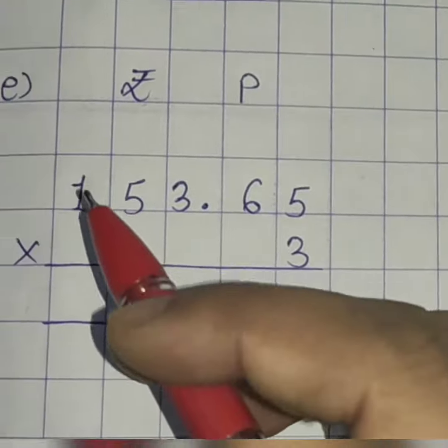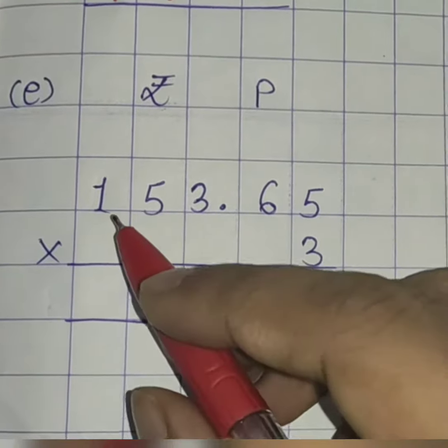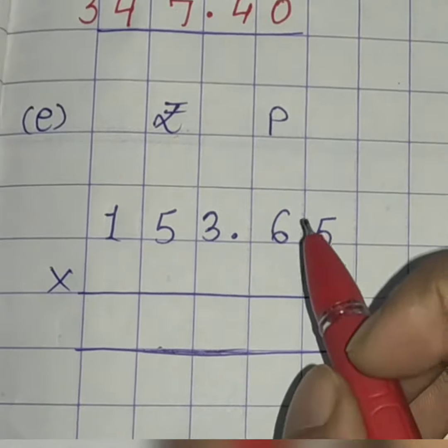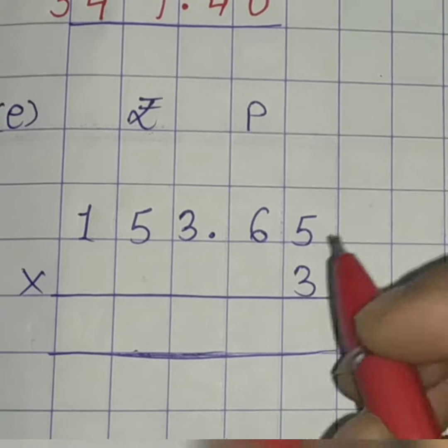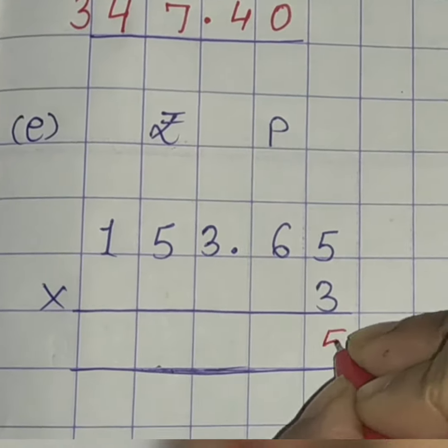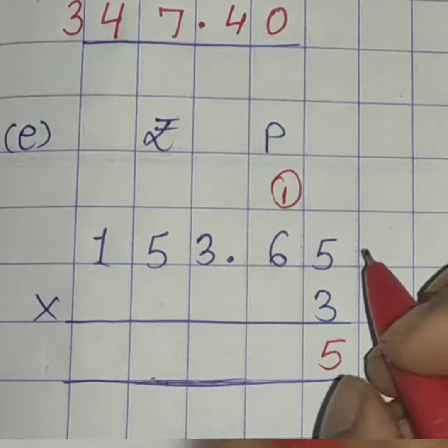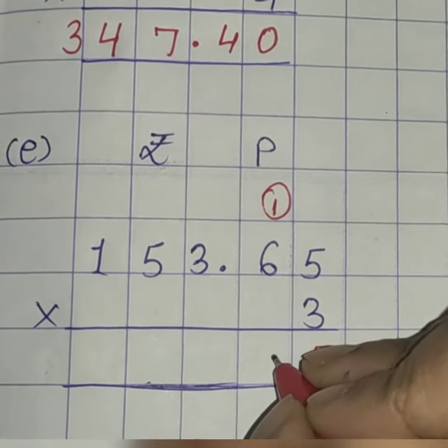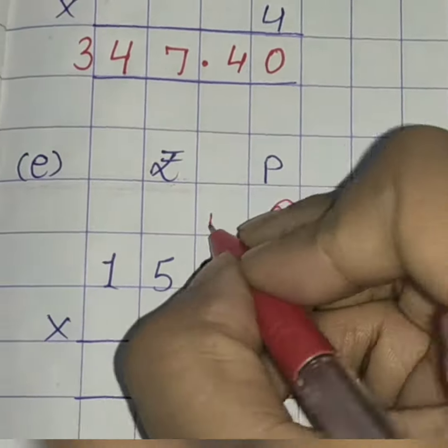Come to E1. B and C you will do in homework. 153 rupees, 65 paise multiplied by 3. 3, 5's are 15. 5 here, 1 as a carryover. 3, 6's are 18. 18 plus 1, 19. 9 here, 1 as a carryover.